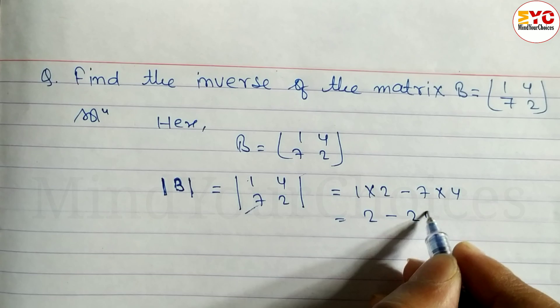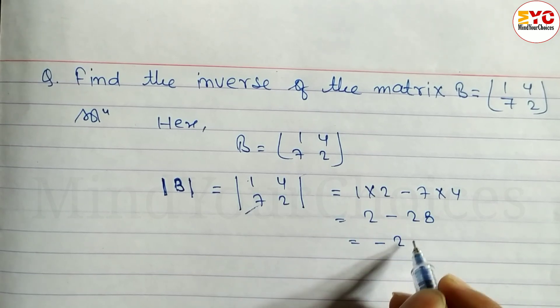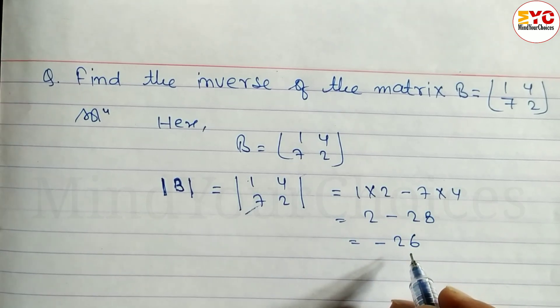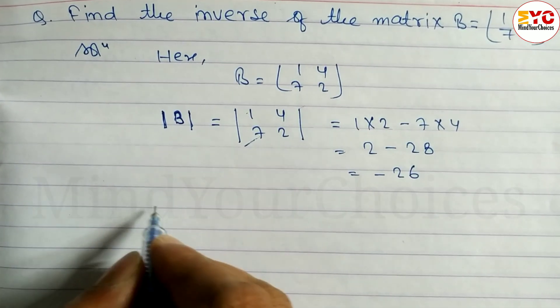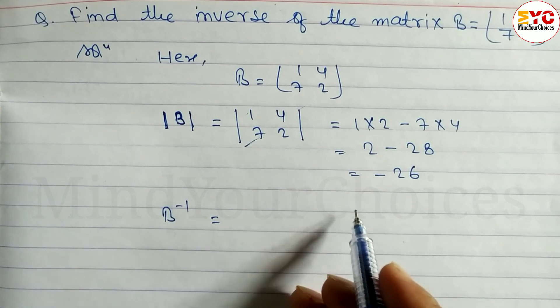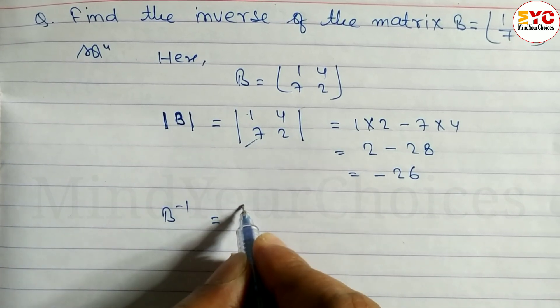So 1 times 2 is 2, minus 7 times 4 is 28, which equals minus 26. So determinant of B equals minus 26. Now to find B inverse, you can write the formula.